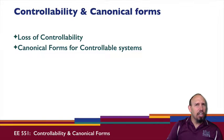Basically the word canonical means a standard, a standard form. There are standard forms for systems to be put into and if you have it in that form you can see certain properties. We're going to talk first about loss of controllability and then we're going to look at canonical forms for controllable systems.